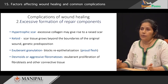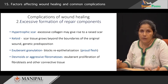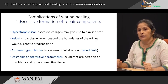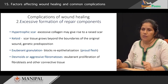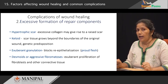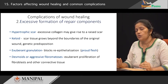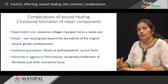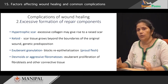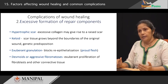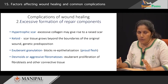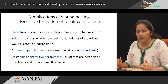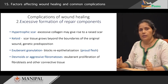The fourth type of excessive tissue formation occurs in the form of a desmoid or aggressive fibromatosis, where there is excessive proliferation of fibroblasts, and these kinds of lesions tend to recur even after removal. The other complication which can recur is a keloid — even if you remove a keloid, it will grow back as a keloid.